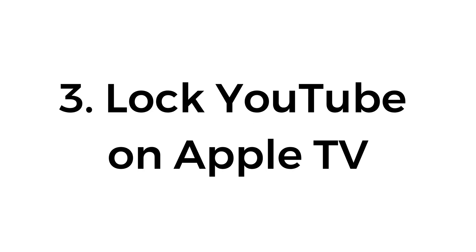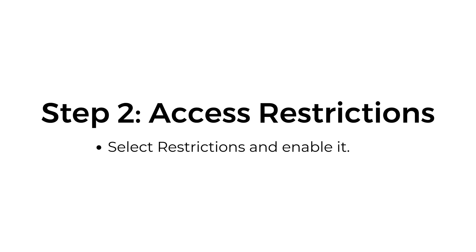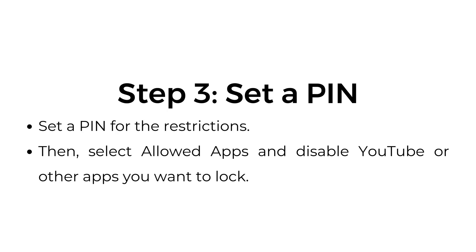Number three: lock YouTube on Apple TV. Step one: open settings — on your Apple TV, go to settings, then general. Step two: access restrictions — select restrictions and enable it. Step three: set a PIN for the restrictions. Then select allowed apps and disable YouTube or other apps you want to lock.